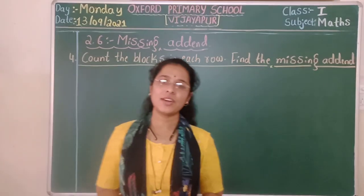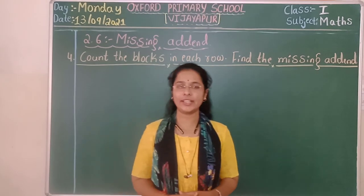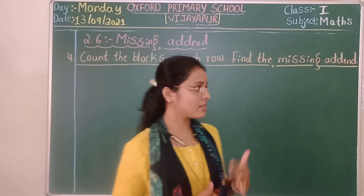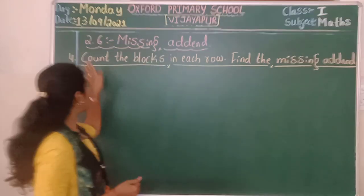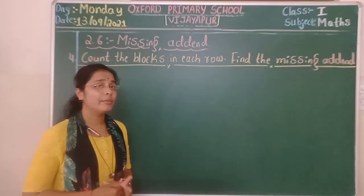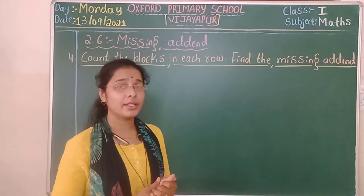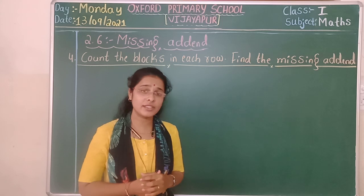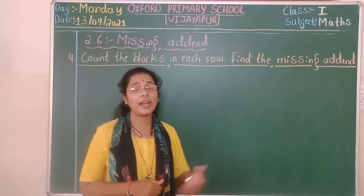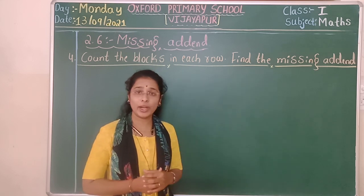Good morning, children. On Saturday's class, we learned missing addends. In today's class also, in the same exercise 2.6, which contains missing addends — one addend is present and one is missing. By seeing the sum, we have to find the missing addend with the help of chili and tomato.